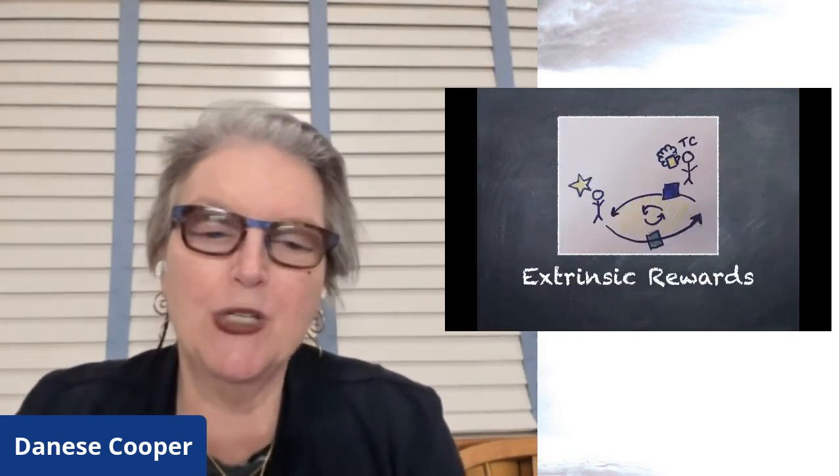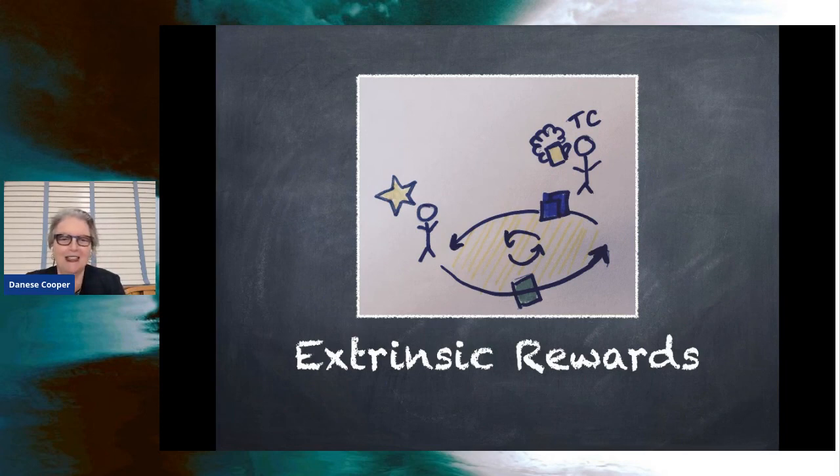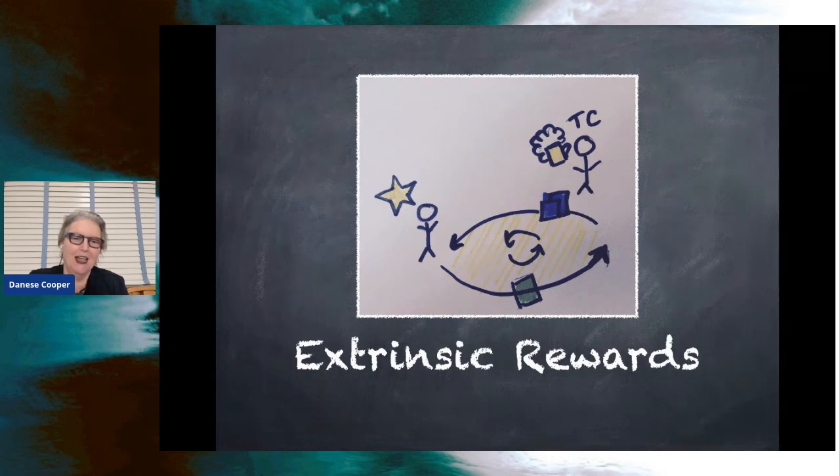We thought a lot about extrinsic rewards, things we could do to get the trusted committer to be happier. And that drawing there shows you a beer that the trusted committer has had delivered to them because they did a good job mentoring somebody. This was a great idea we had until we realized that most of the people we wanted to support didn't drink because they were Hindus. So we had to think of other rewards for those people.